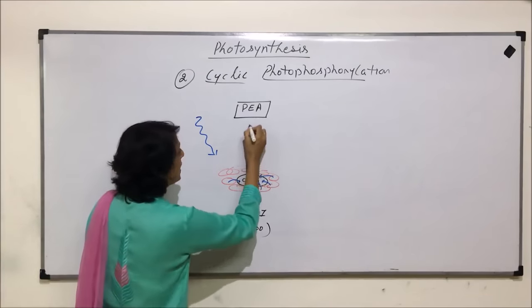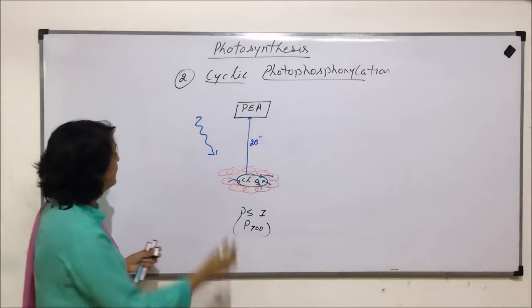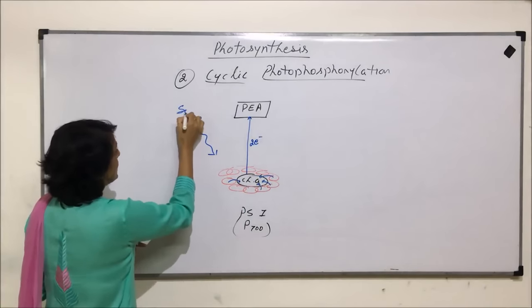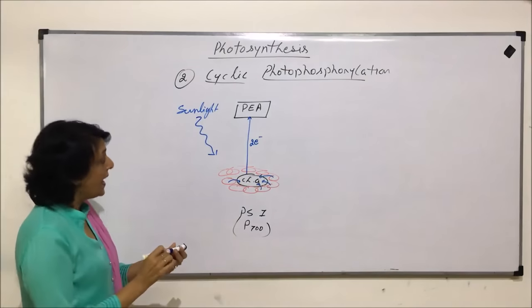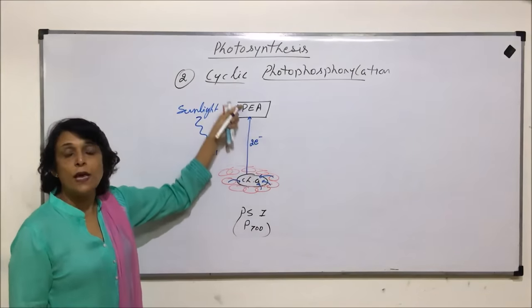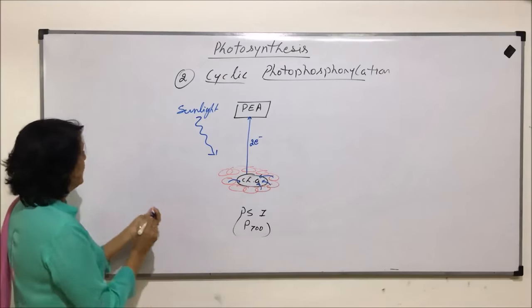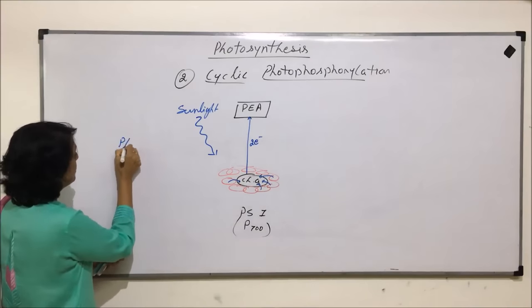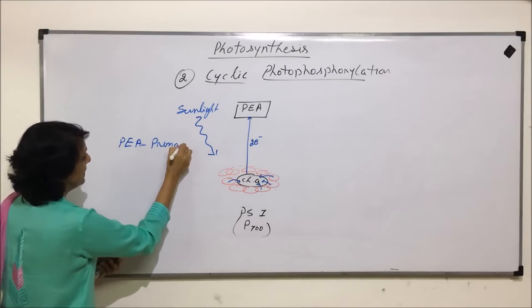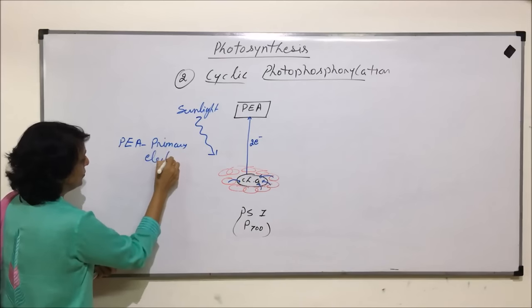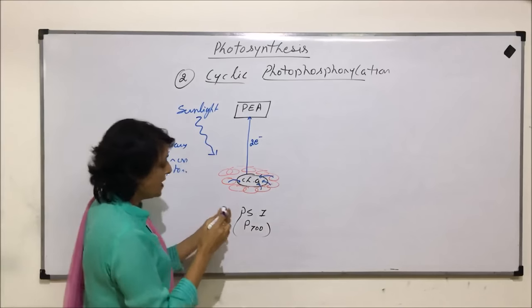Once chlorophyll A on its own has absorbed sufficient photons and received photons from the accessory pigments, a pair of electrons would get excited because of that extra energy. Again, it is the sunlight, that means solar energy is absorbed and this pair of electrons has been accepted by the primary electron acceptor.